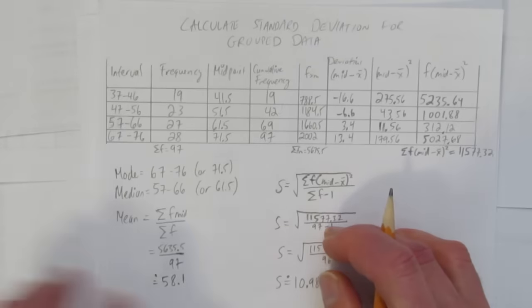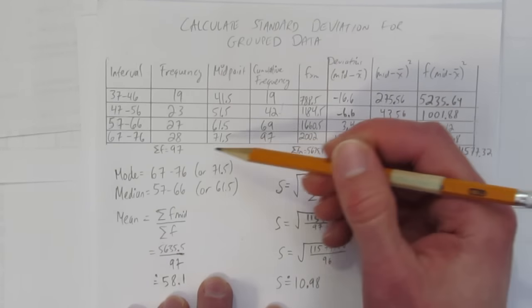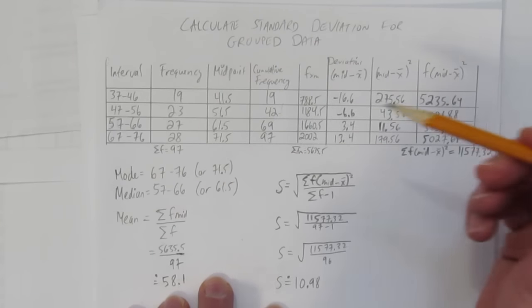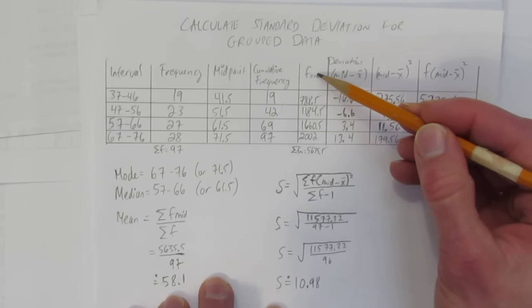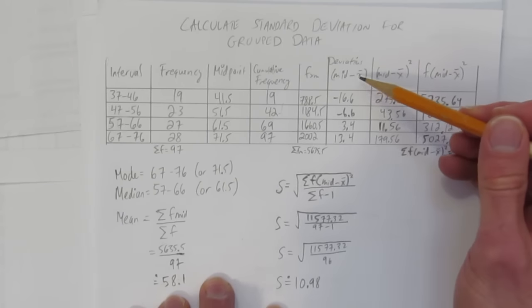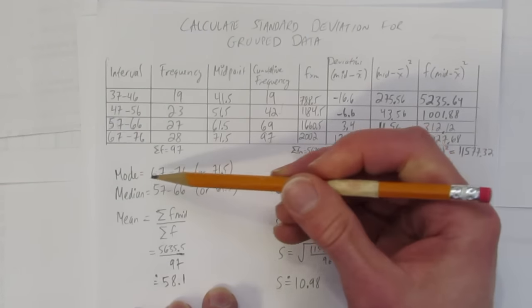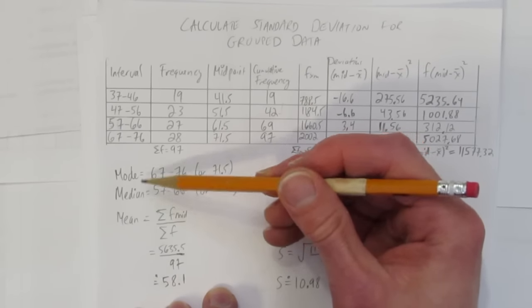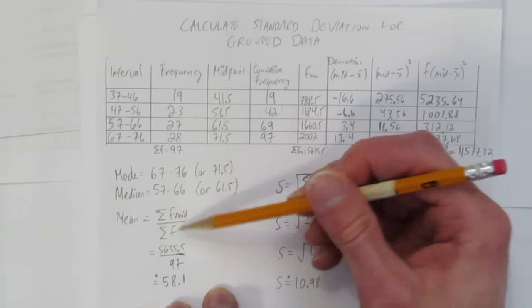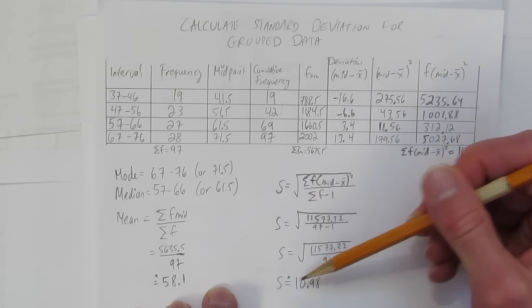So we've calculated the standard deviation for group data by first finding the midpoints, doing the cumulative frequency, which we didn't need so much except for its sum and to help us with the median and the mode. We calculated here f times m, that's the frequency times the midpoint. And then we did the midpoint minus the mean. Those are your deviations. We squared our deviations and multiplied them by the frequency, then added them all up. And we used that for the formula. We also, on the side, we just showed the mode and the median, just so that if you need to show it, you can. And we needed to calculate the mean to get those deviations. Once we had all that, we calculated the standard deviation using the formula. And that's how you calculate standard deviation for group data.